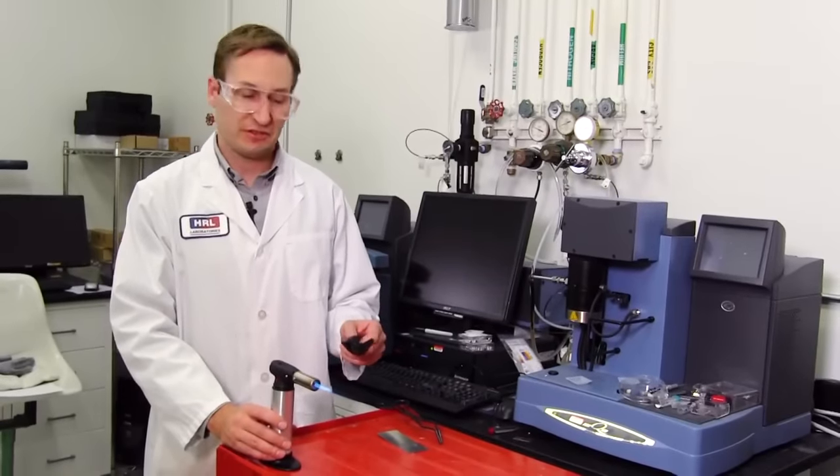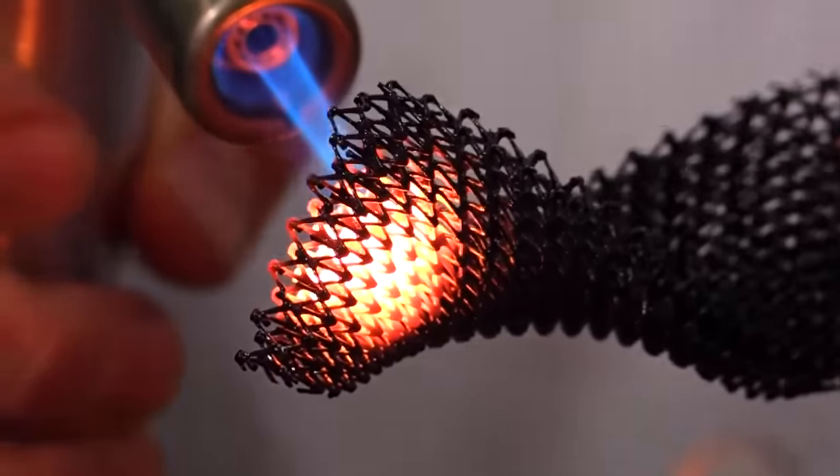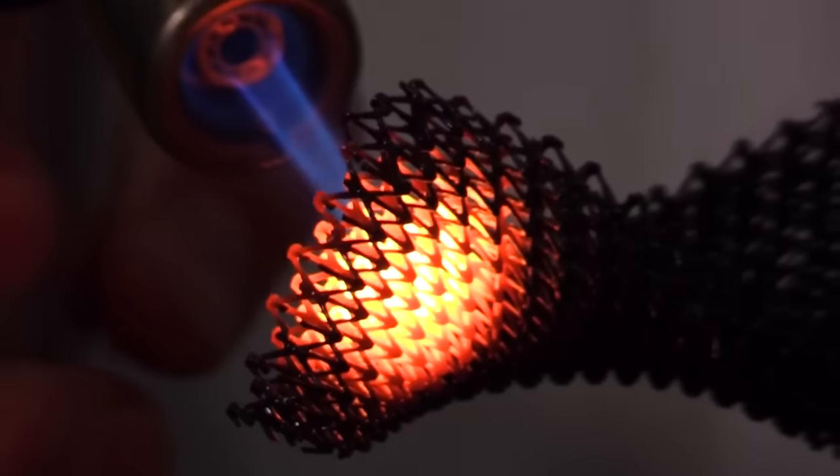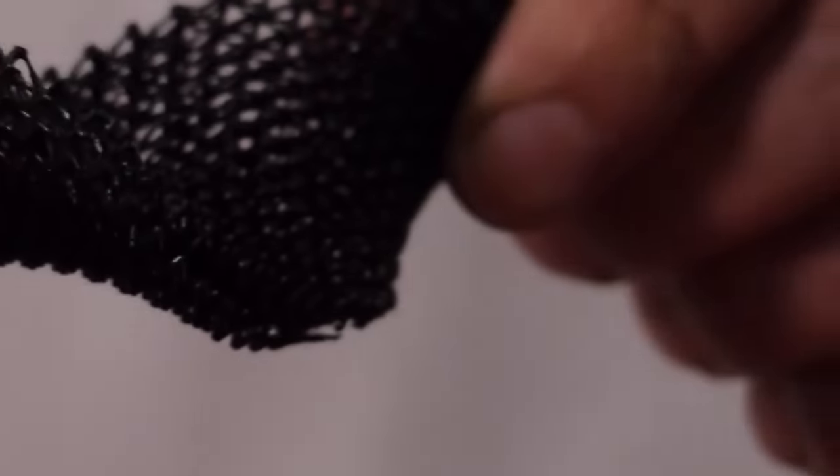Current methods generally produce parts which are brittle and under machining can fall apart, therefore limiting their applications. This ceramic can withstand extremely high temperatures. I'm testing it here with a blowtorch. The flame exceeds 1,000 degrees Celsius, and the material doesn't melt or deteriorate. Also, this ceramic has a really low thermal conductivity, so my fingers don't get hot. As you can see, the material is unchanged.